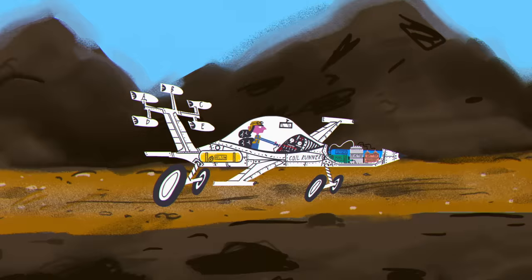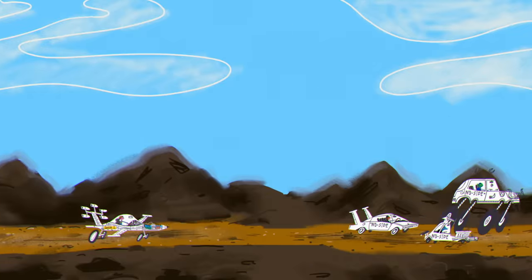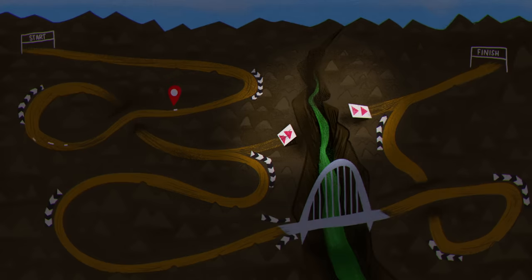As the grueling race gets underway, you find yourself falling further and further behind. Your only chance is to take a shortcut your uncle told you about, the Flux Ravine Gambit.